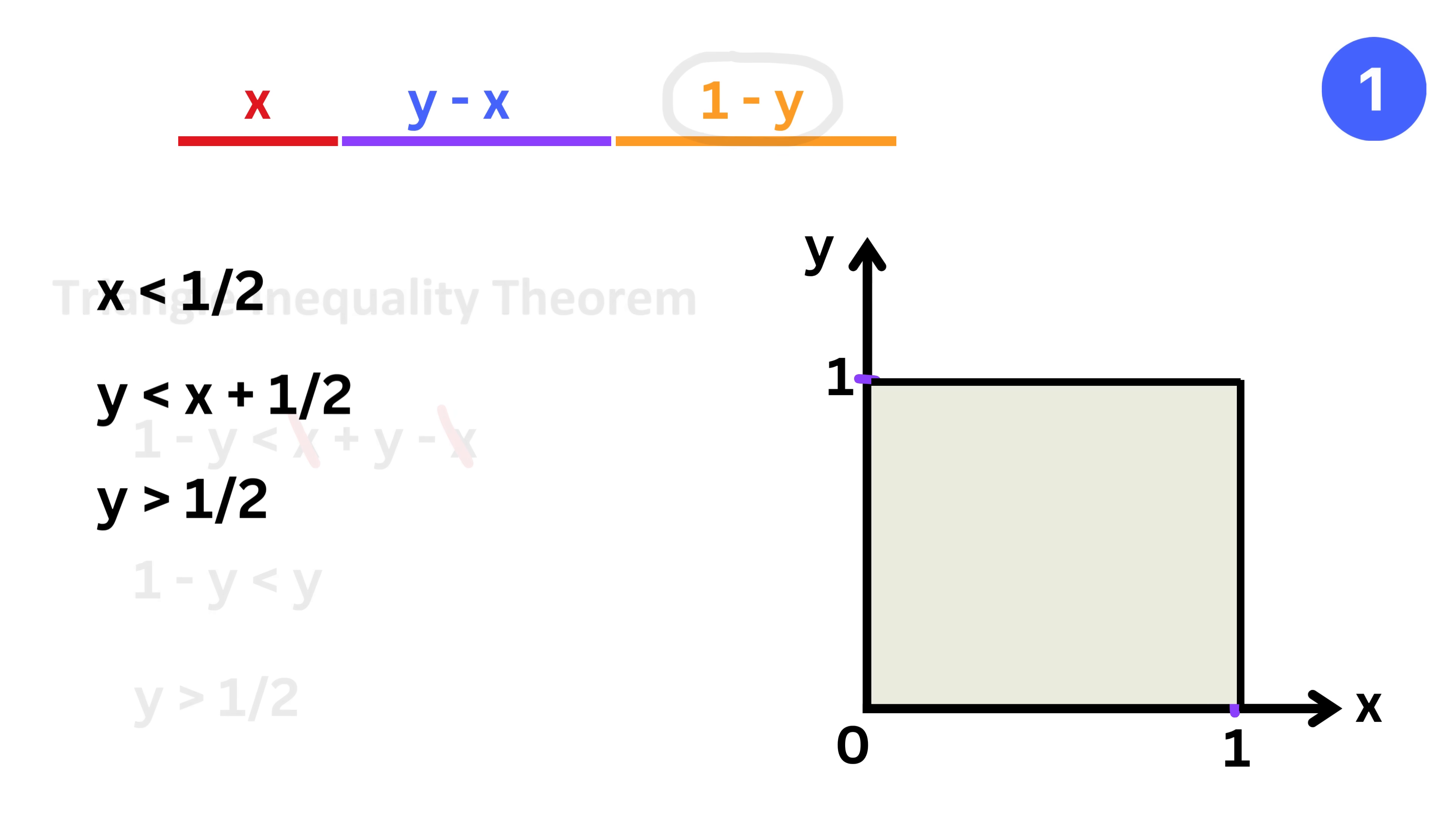These are the requirements for these three pieces to together form a triangle. Here comes the fun part. This is y equals half and this is x equals half. So this part corresponds to x less than half and greater than zero.